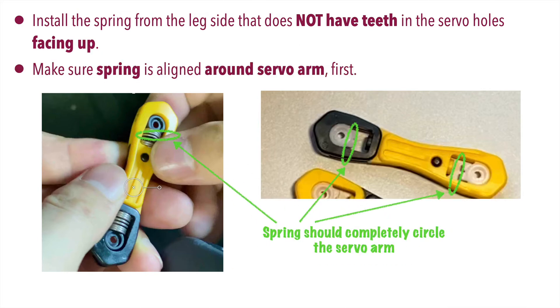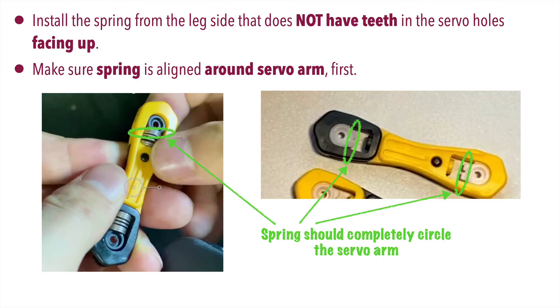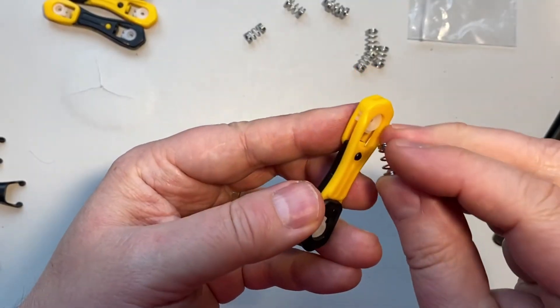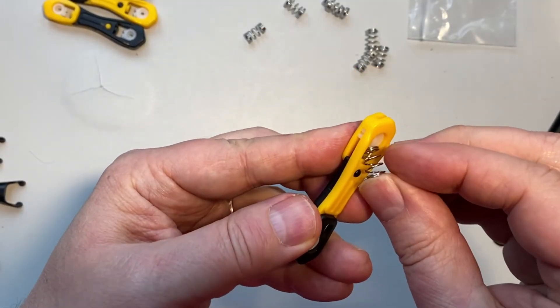Next, insert one end of the spring into the servo arm and make sure that the spring is aligned around the servo arm, so the spring goes over the arm and it won't slide off.